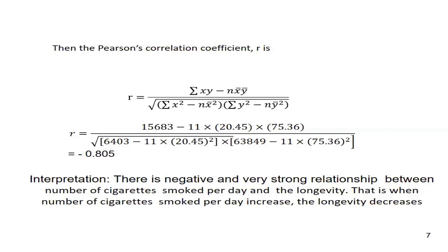What does the negative correlation mean? When the number of cigarettes smoked per day — the independent variable x — increases, the longevity decreases. That is, somebody taking more cigarettes has less chance of living longer; their years of living decrease. So somebody taking more cigarettes has less chance to live longer — that is, the years of living decrease. Please remember: negative correlation means when one variable increases, the other decreases.